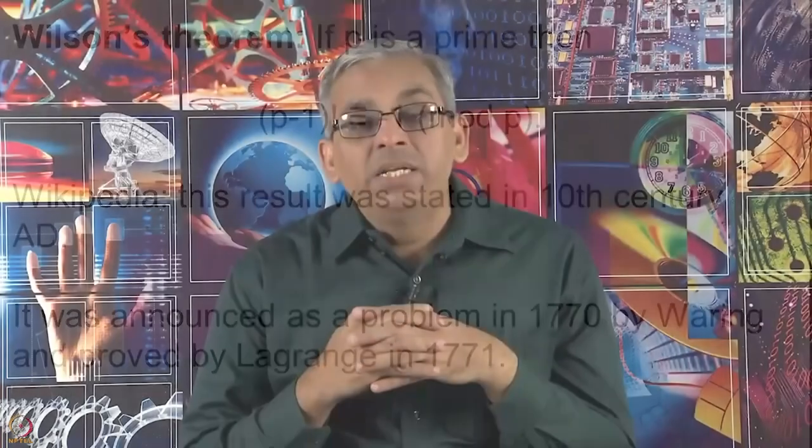However, it was Lagrange who proved it in the next year, 1771. But since it was Wilson who made it well known — who posed it as a problem when he received it from Waring and, unable to solve it, asked others — it came to be known as Wilson's theorem.